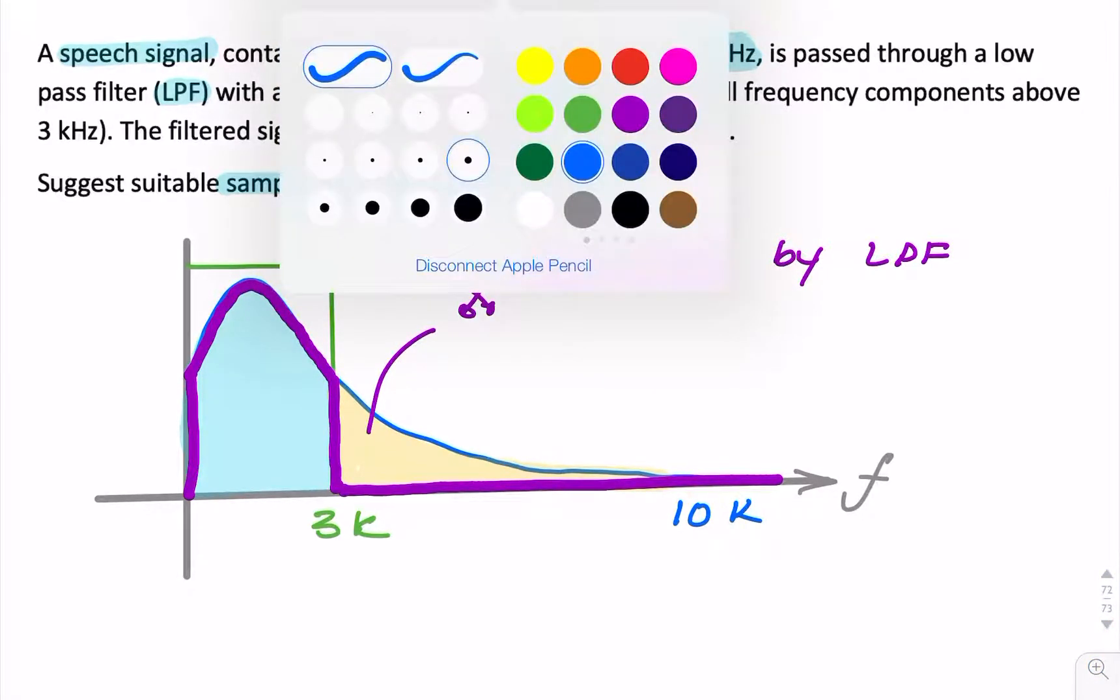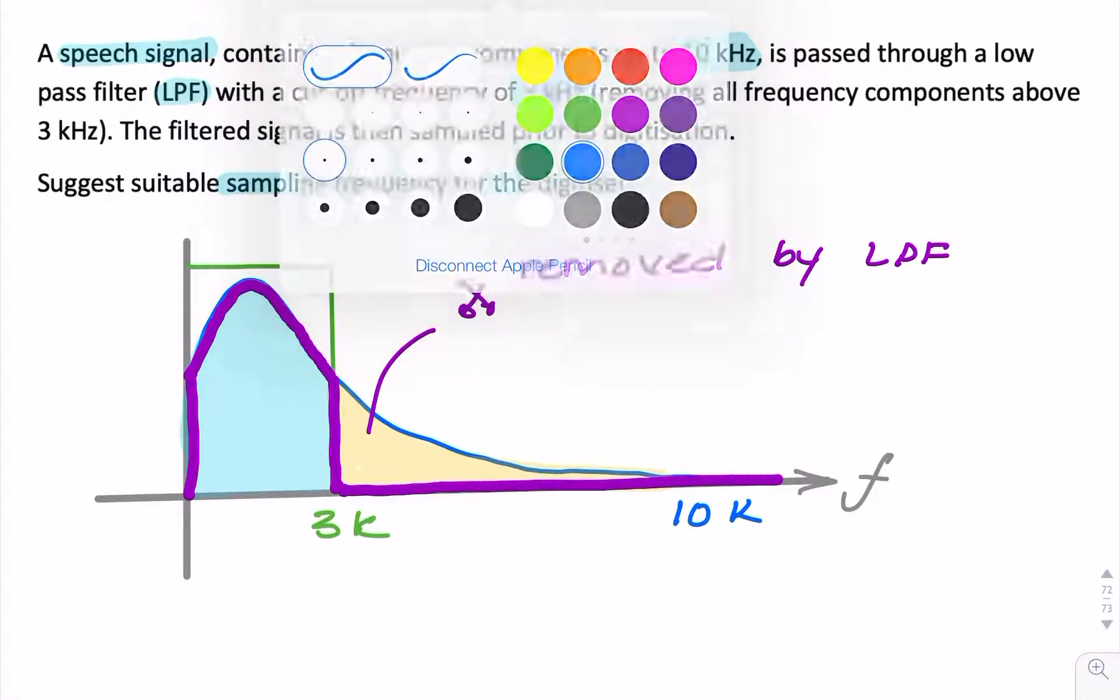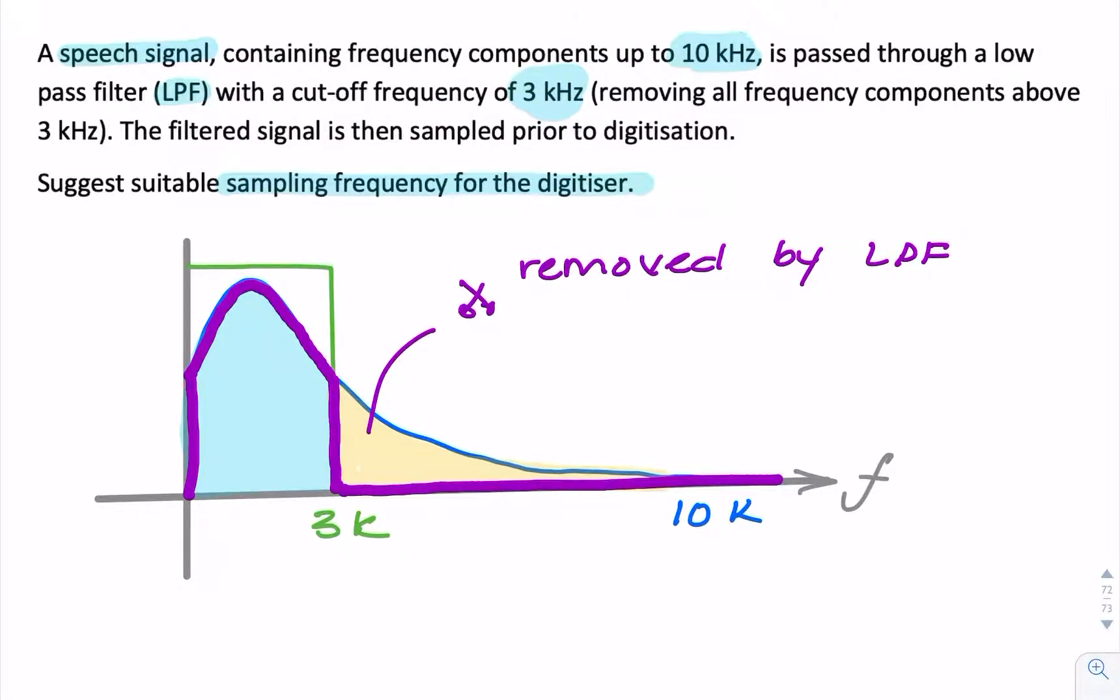Well, sampling frequency is going to be at least twice the upper frequency there. So the sample frequency, or the Nyquist frequency, will be 2 times 3 kHz, which is 6 kHz.